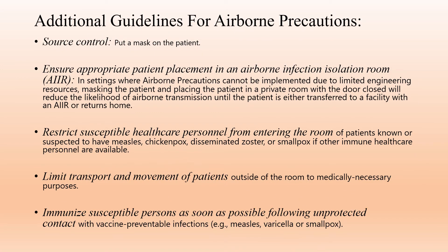Additional guidelines for airborne precautions. Source control: put a mask on the patient. Ensure appropriate patient placement in an airborne infection isolation room. In settings where airborne precautions cannot be implemented due to limited engineering resources, masking the patient and placing the patient in a private room with the door closed will reduce the likelihood of airborne transmission until the patient is either transferred to a facility with an airborne infection isolation room or returns home.